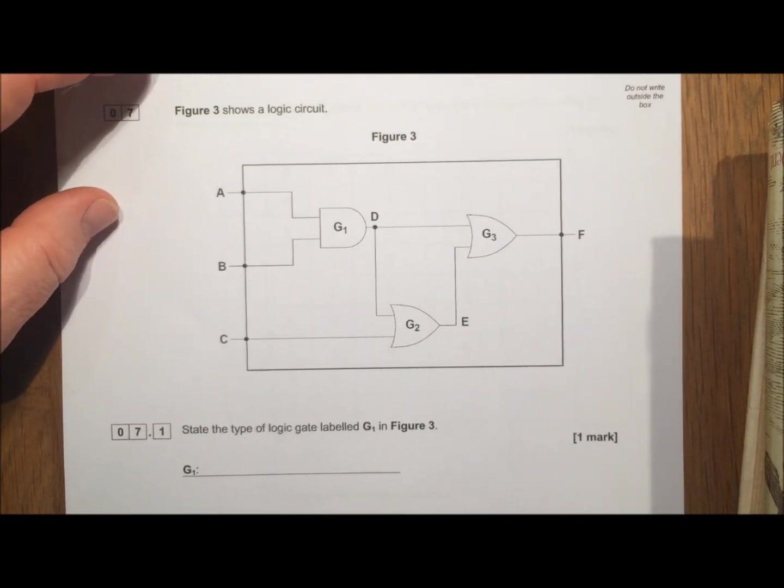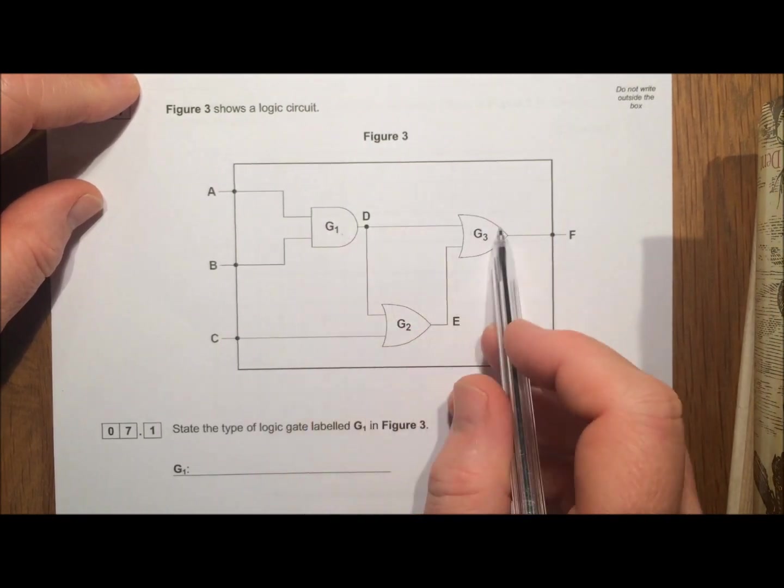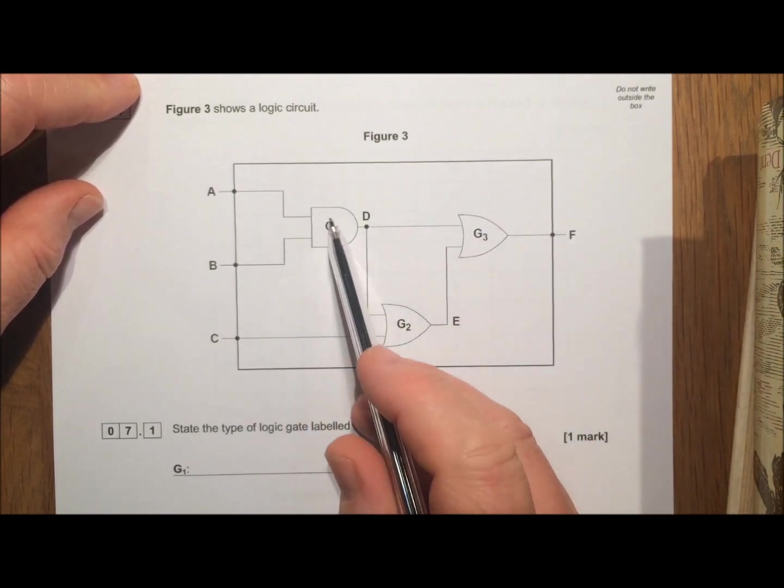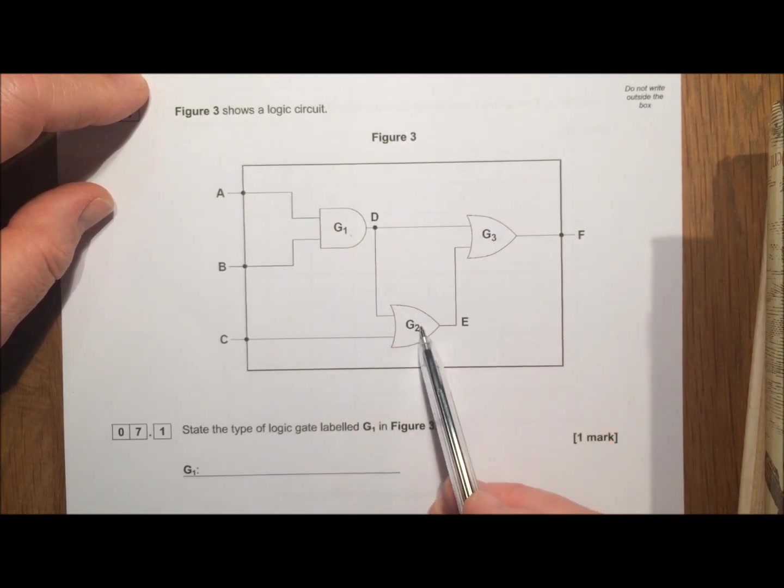Question 7, and we're looking at logic gates again. So you've got three logic gates on here. And if we look at them again, this is an AND gate and we have two OR gates.